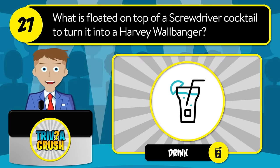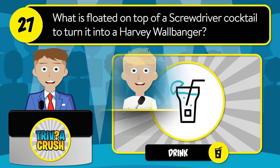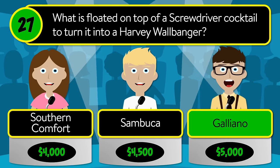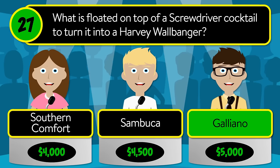Question number twenty-seven: what is floated on top of a screwdriver cocktail to turn it into a Harvey Wallbanger? Is it Southern Comfort, sambuca, or Galliano? The correct answer is Galliano.